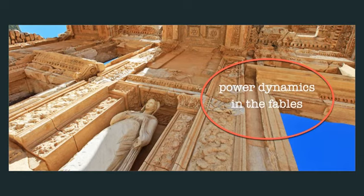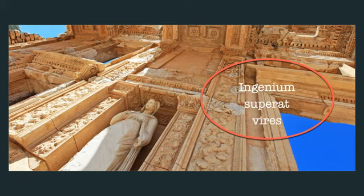Accordingly, the fables often deal with themes of power dynamics and relationships between individuals who have disparate social status or imbalanced levels of power. We see instances where the figure with less power seems to come out on top — sort of underdog stories — usually through harnessing their cleverness or turning the other figures' vices like hubris or vanity against them. Lehrer invokes the Latin phrase ingenium superat vires to describe this value: cleverness beats force.